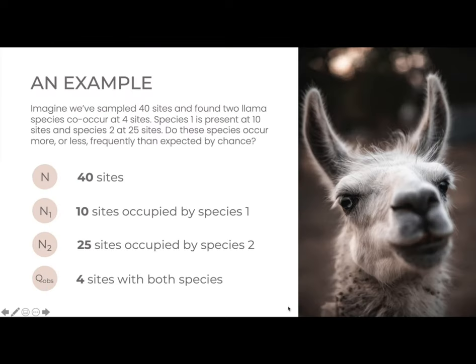Once we know Pj for all possible values of j, we end up with a discrete probability distribution. Discrete probability distributions allow us to easily identify the probability of seeing a particular value. For our specific example, imagine we've sampled 40 sites and found 2 llama species co-occurring at 4 sites. Species 1 is present at 10 sites and species 2 at 25 sites. Do these species occur more or less frequently than expected by chance?